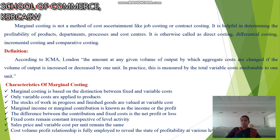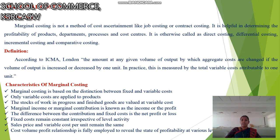Next, the definition. According to ICME London, the amount at any given value of output by which aggregate costs are changed if the volume of output is increased or decreased by one unit. In practice, this is measurable by the total variable cost of one unit.